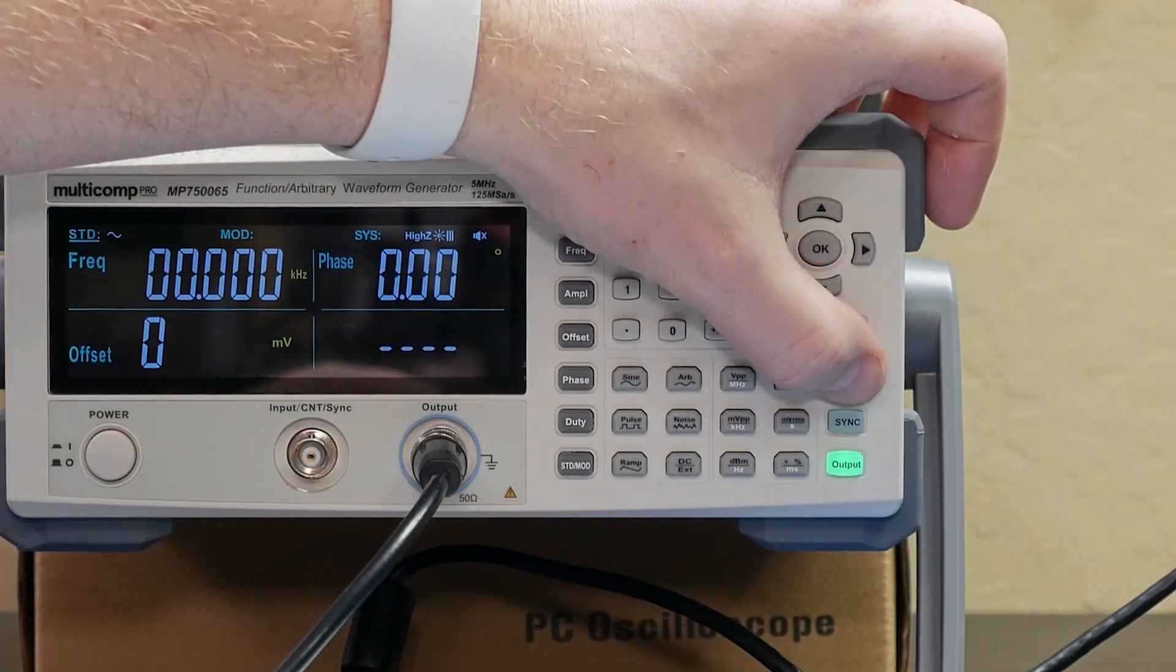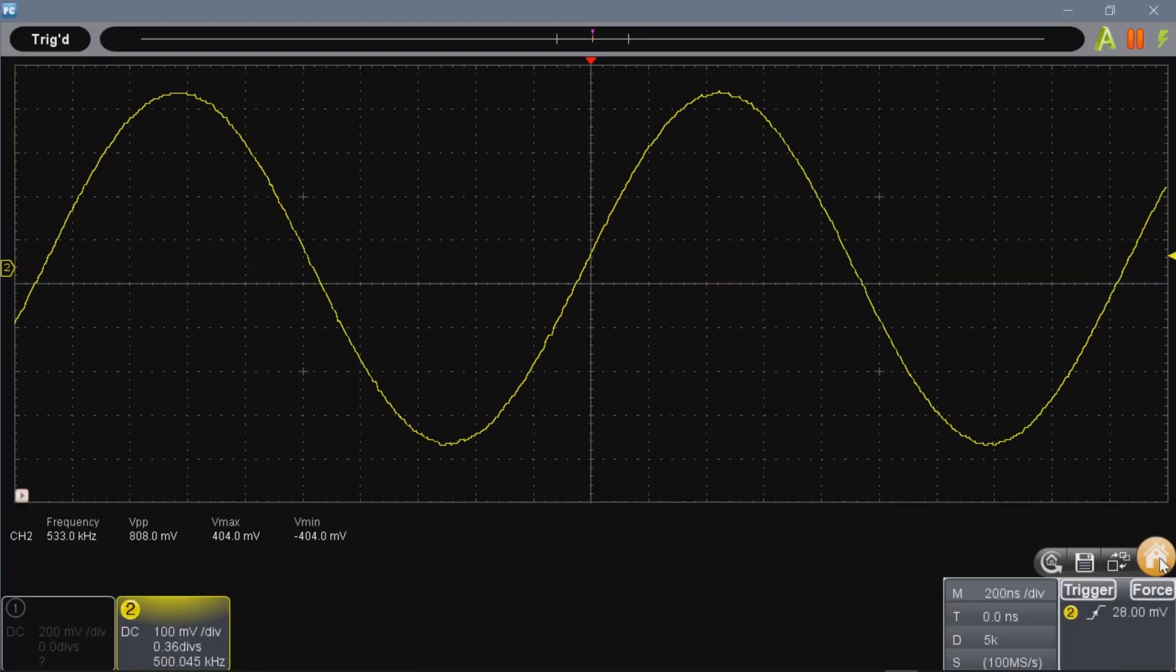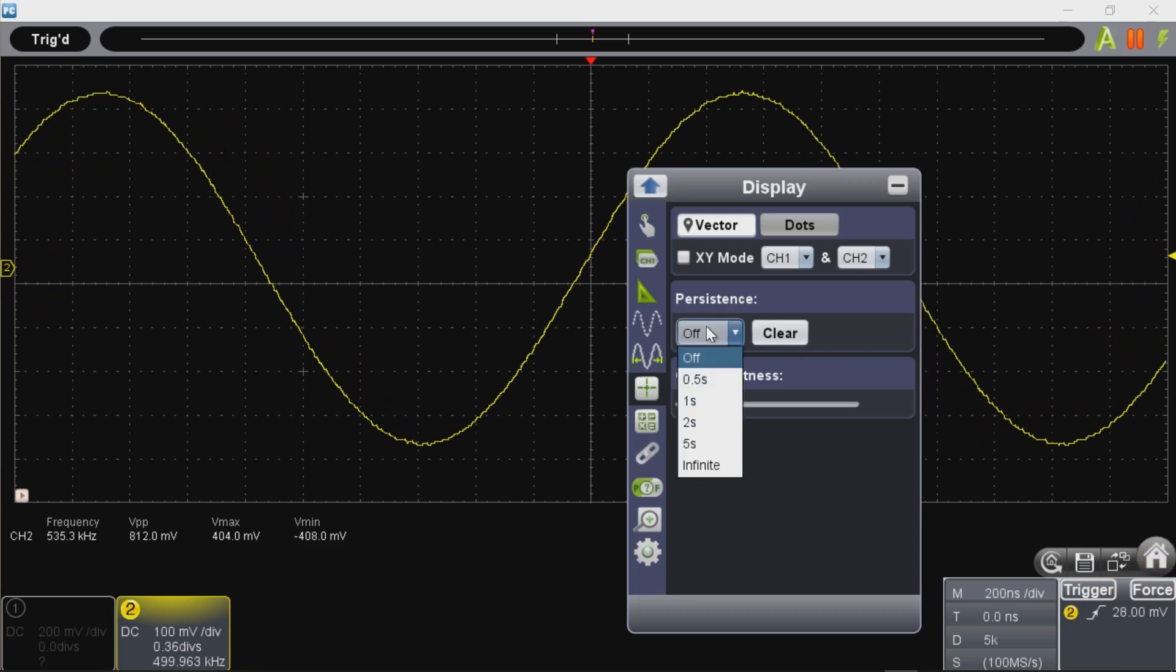Modulation simulates signals like AM or FM radio signals, at least at lower frequencies. If I set the generator to apply an FM modulation, the signal looks bouncy on the scope. Personally, I think turning on persistence shows the frequency change even better.